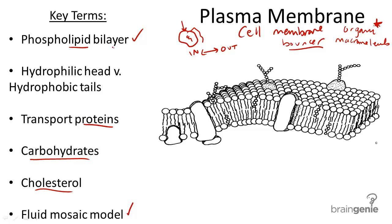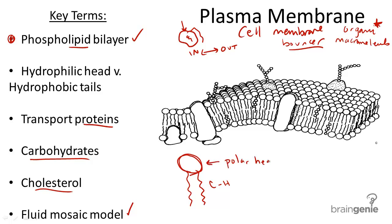The plasma membrane is made of a phospholipid bilayer. A phospholipid is a long non-polar hydrocarbon fat tail made of carbons and hydrogens bonded together, along with a polar head. This polar head is made of phosphorus and oxygen atoms. The polar head is called hydrophilic — from the root hydro meaning water, and philo meaning love of.